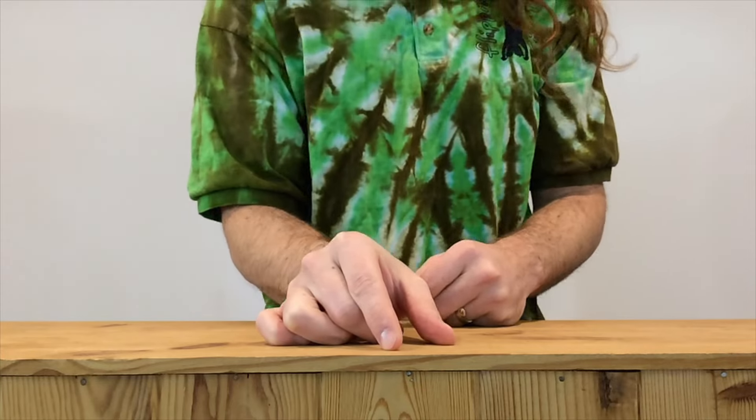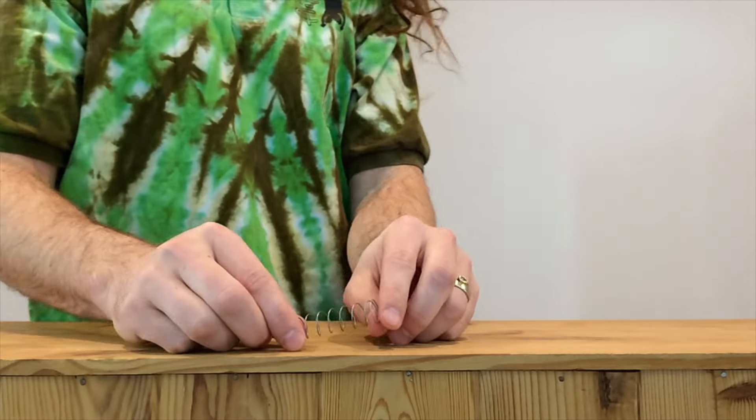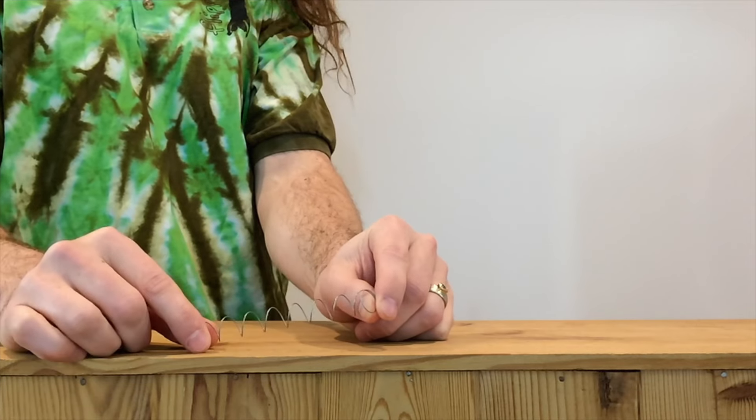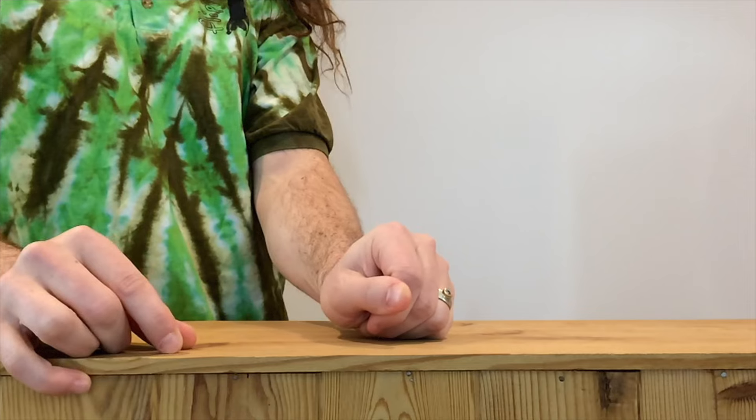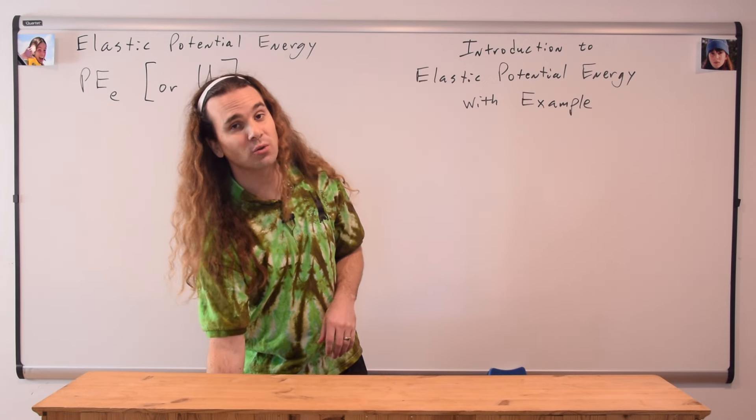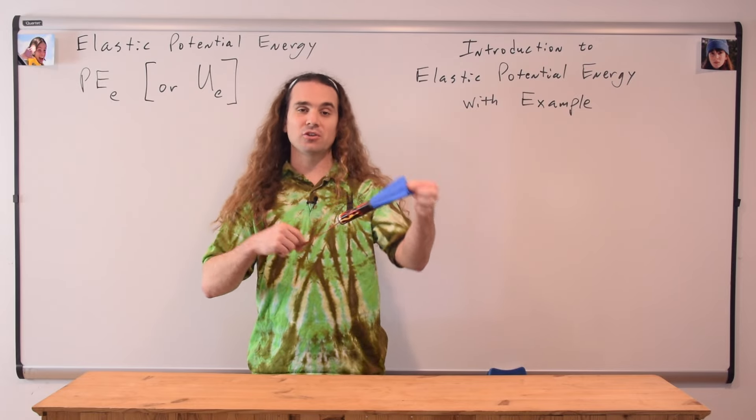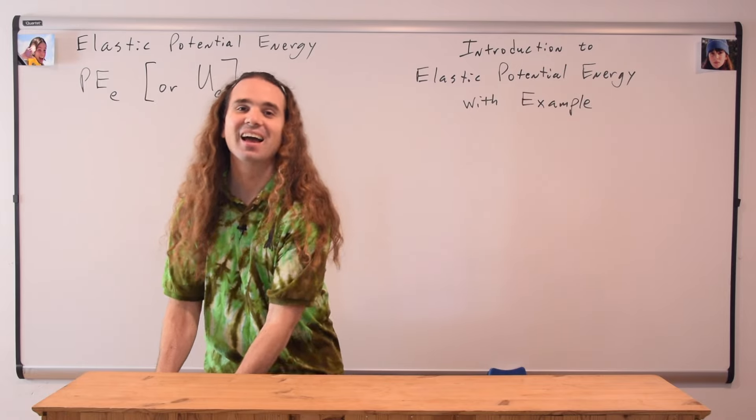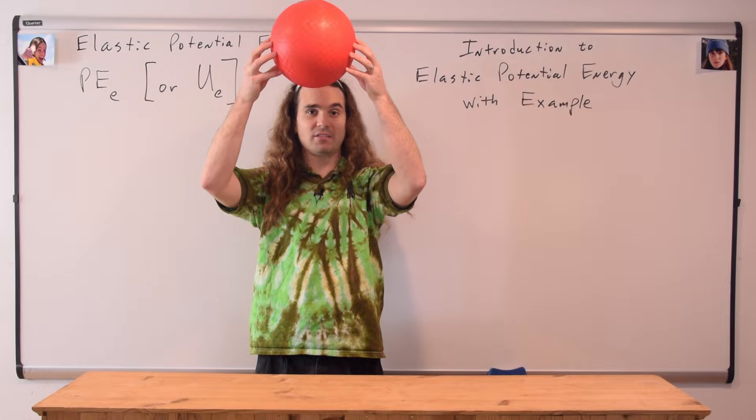We can also elongate the spring, we can make it longer. Again, elastic potential energy is stored in the spring and can be converted to kinetic and gravitational potential energy. Elastic potential energy isn't only stored in springs. This toy, for example, stores elastic potential energy in this rubber band. And this rubber ball stores elastic potential energy when it strikes the ground.